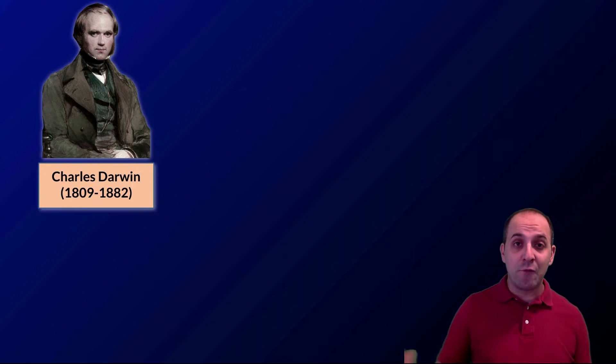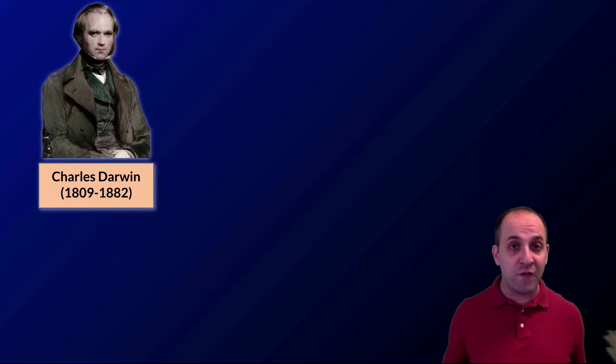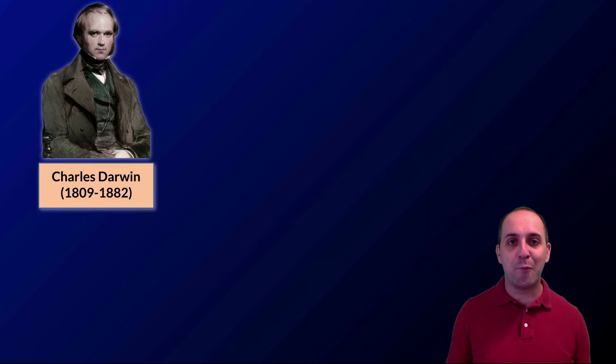Darwin was very much a member of polite society in 19th-century England, meaning his family was well off enough that he could pursue various careers. He tended to be pretty bad at what he wanted to do — for instance, he tried to be a physician but found the operating theater of the 19th century rather distasteful. He wasn't sure what he wanted, but he always had an aptitude for the natural sciences.